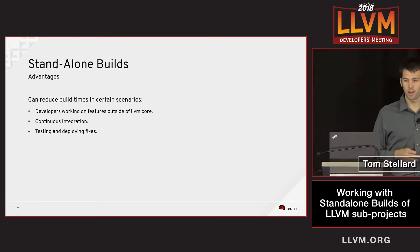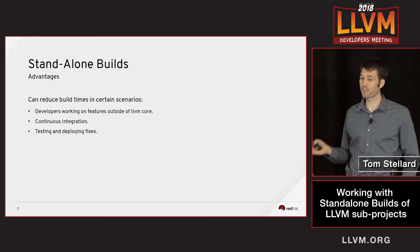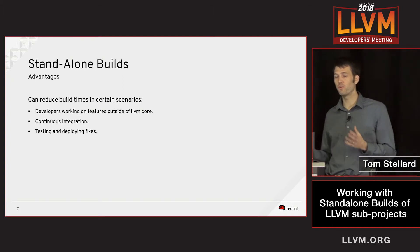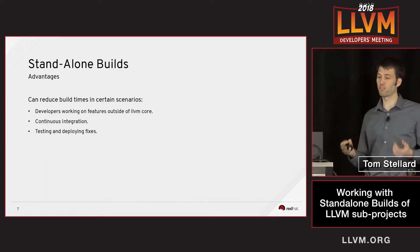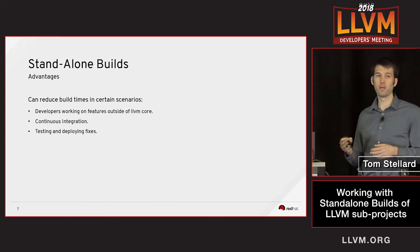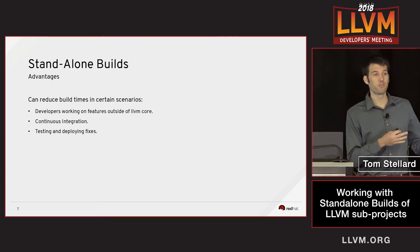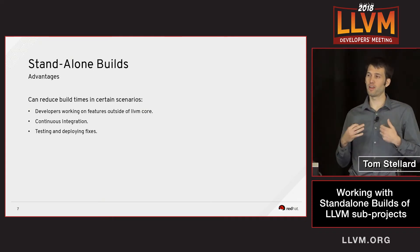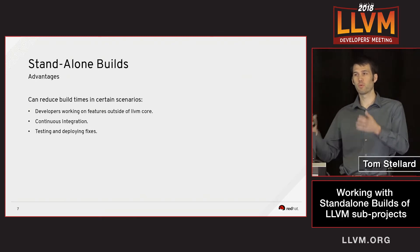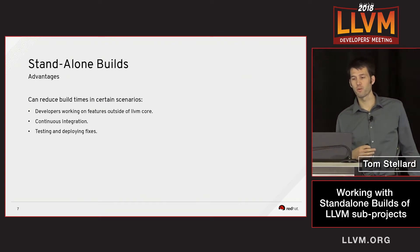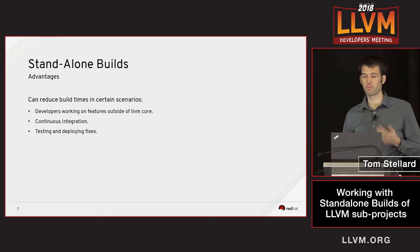Besides helping developers, standalone builds are also very useful on CI systems because they allow you to, when a change comes in, only build the subproject that actually changed. For example, you can reuse the previous good LLVM build, and when a change comes in from LLD or Clang or whatever, you can just build that project against the previous known good version of LLVM, getting some savings there.